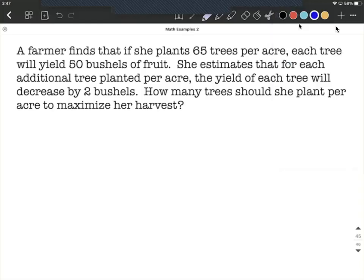In this example, a farmer finds that if she plants 65 trees per acre, each tree is going to yield 50 bushels of fruit. Then she estimates that for each additional tree planted per acre, the yield of each tree will decrease by two bushels. How many trees should she plant per acre to maximize her harvest?